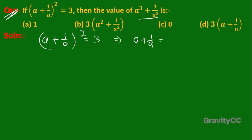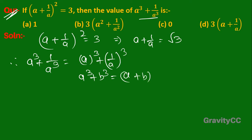equals √3. Therefore, a³ + 1/a³ is equal to a³ + 1/a³. Now we use the identity of a³ + b³ equal to (a + b)³ minus 3ab(a + b).